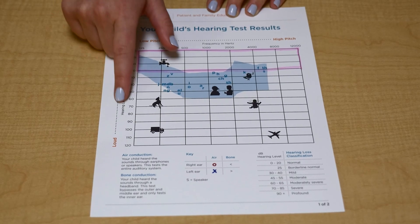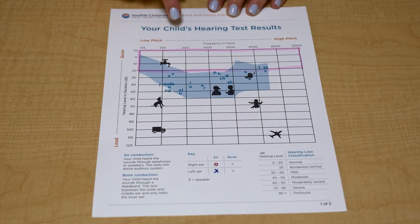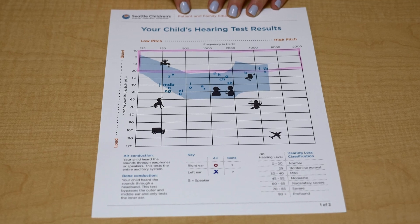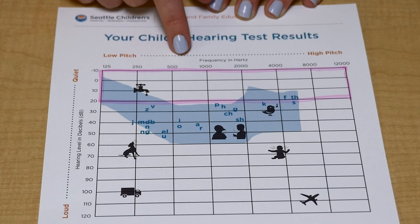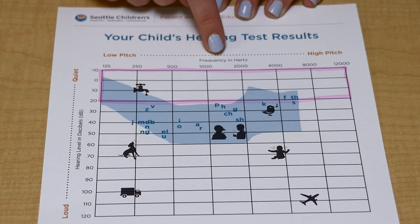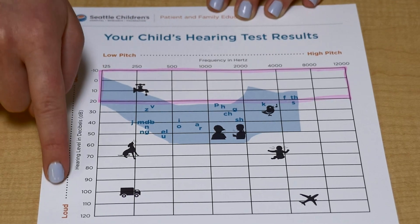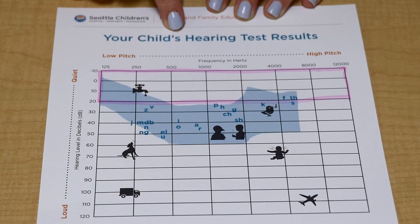This graph is called an audiogram. It has the responses from your child's hearing test. This type of hearing test measures what frequencies or pitches can be heard at what volume. Let's take a look at the audiogram.